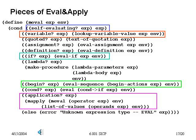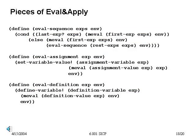To evaluate a sequence, we evaluate each of the expressions in order. When we get to the last one, we return its value as the value of the overall expression. We bury some things behind data abstractions, but we can see the form we'd expect: if it's the last expression, we get it out and evaluate it by recursively calling eval. Otherwise, we evaluate the next expression in the sequence, and having done that, we move on and evaluate the remaining expressions.